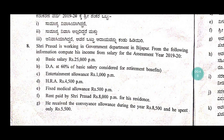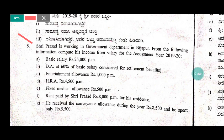Let us start the problem. Shri Prasad is working in a government department — that is important. Our government employee or private employee distinction is very important, so we will talk about it. Shri Prasad is a government employee in Bijapur. From the following information, compute his income from salary for the assessment year 1920.